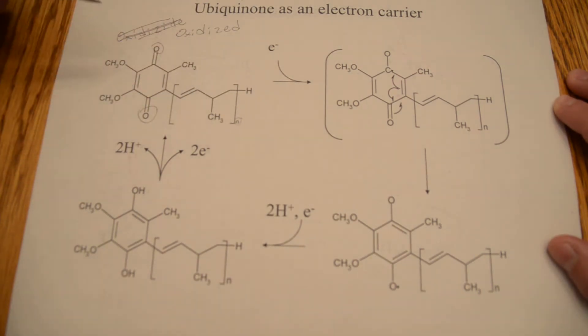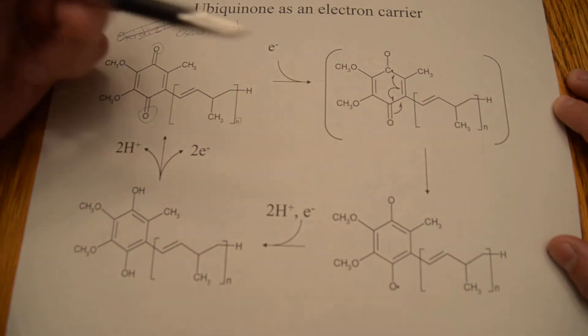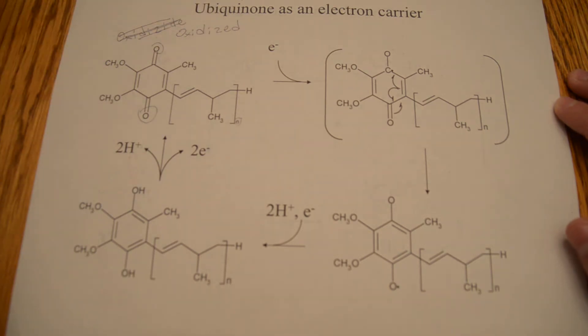It's a membrane molecule, so it doesn't leave the intermitochondrial membrane. It just floats around within the membrane to transfer the electrons.